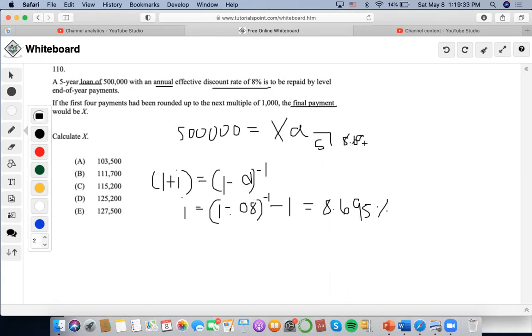We already found the effective interest rate here. We want to find these level payments that consist of $500,000. So I'm going to do $500,000 as the present value, 5 as the number of years, 8.695 as the interest rate, 0 as the future value. Let's compute the payment. Payment is going to be $127,530.55.